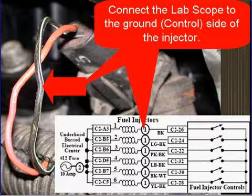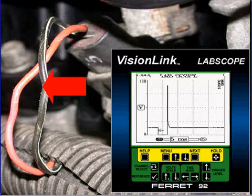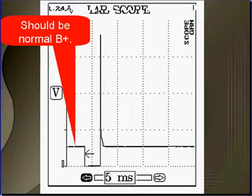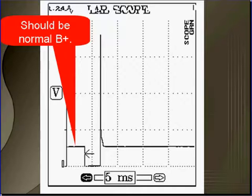As you can see, the wire is black and white. Down in the schematic, that tells us we're on injector number five. Get your waveform on your lab scope and diagnose it from left to right. The first part of the waveform should be normal battery voltage — that's near 14 volts with the charging system working normally.